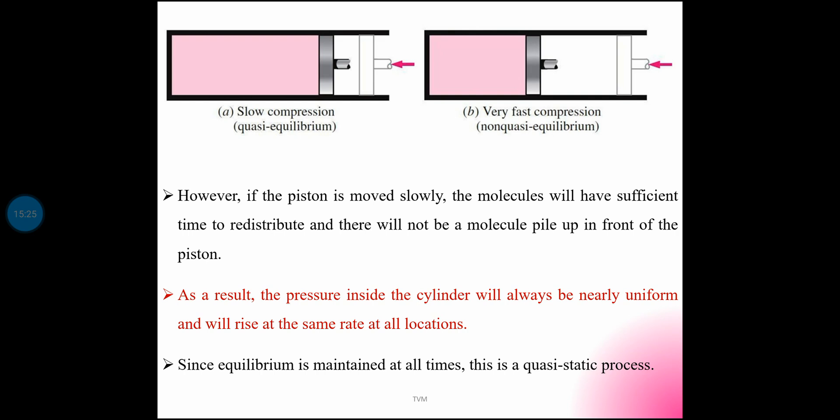If the piston is moved slowly, the molecules will have sufficient time to redistribute and there will not be a molecule pile-up in front of the piston. As a result, the pressure inside the cylinder will always be nearly uniform and will rise at the same rate at all locations.